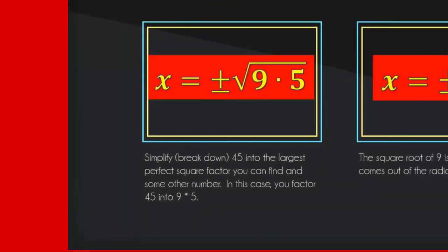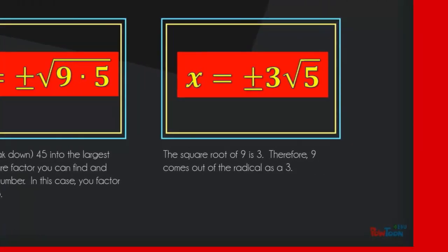Now we factor the constant term, 45. 9 is the largest perfect square term in 45. Since the square root of 9 is 3, 9 comes outside the radical as a 3, giving us the two solutions x equals plus or minus 3 times the square root of 5.